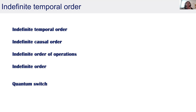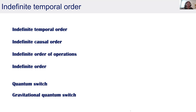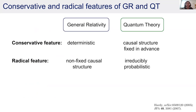When we have quantum spacetime explicitly involved in this indefinite order in a quantum switch, we call it a gravitational quantum switch. Today I'm going to talk about a proposal for a gravitational quantum switch with some special properties. But before starting to talk about my work, let me comment on how this field came up.